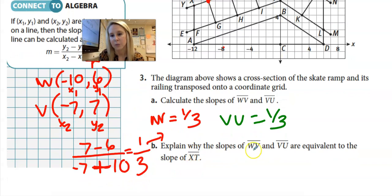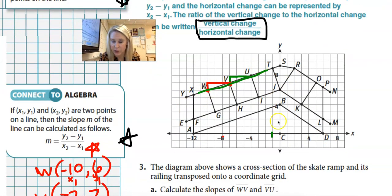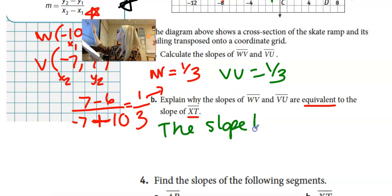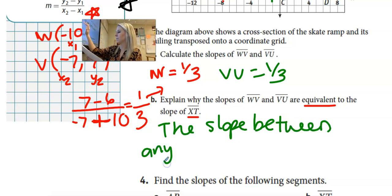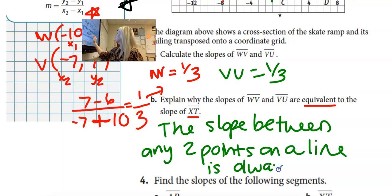Okay. I'm going to use my rise over run. Explain why the slopes of WV and VU are equivalent, meaning equal to the slope of XT. So XT is this line in green. It wants me to find the slope of the line in green. And WV and VU are located on the same line. They should have the same slope. The slope between any two points on a line is going to be the same. So since WV and UV were both located on XT, anything located on the same line is going to have the same slope.